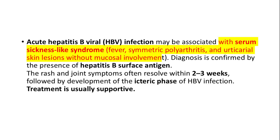Acute hepatitis B viral infection may be associated with a serum sickness-like syndrome: fever, symmetric polyarthritis, and urticarial skin lesions without mucosal involvement. Diagnosis is confirmed by the presence of hepatitis B surface antigen. The rash and joint symptoms often resolve within two to three weeks, followed by development of the icteric phase of HBV infection. Treatment is usually supportive.